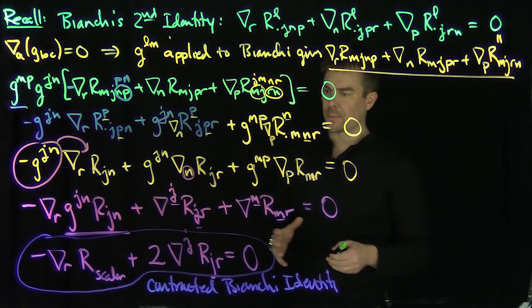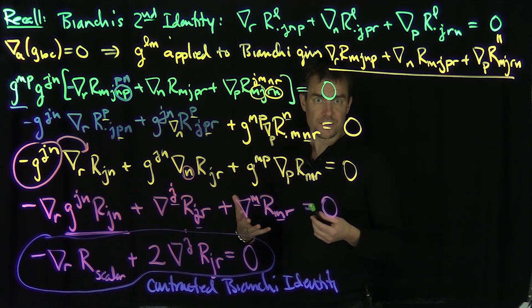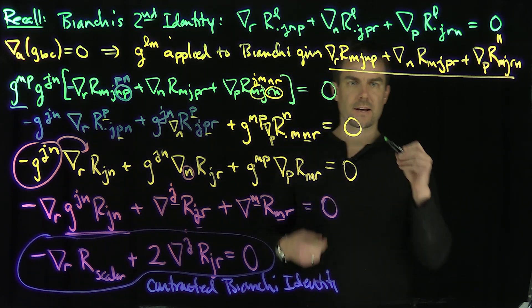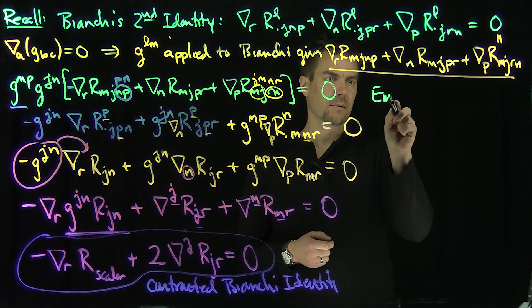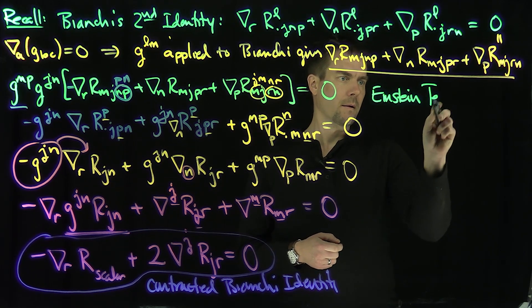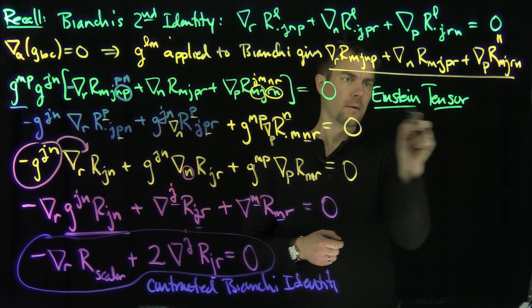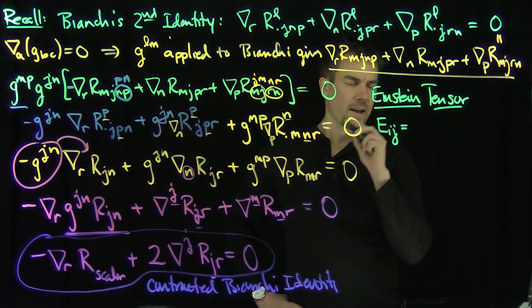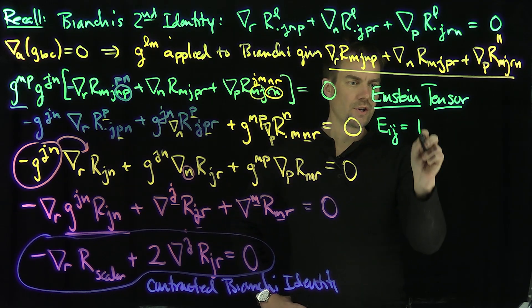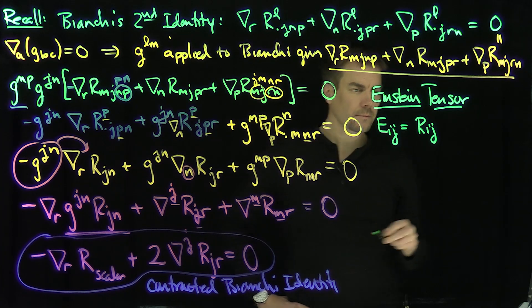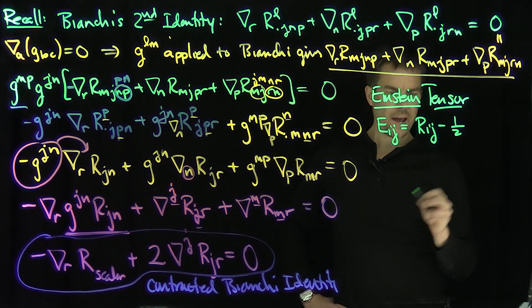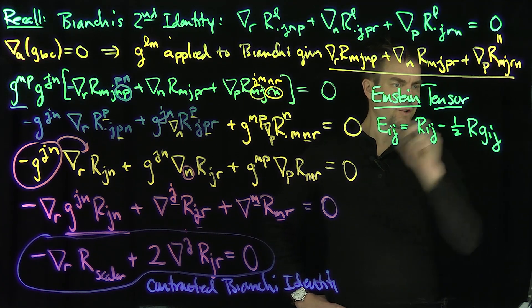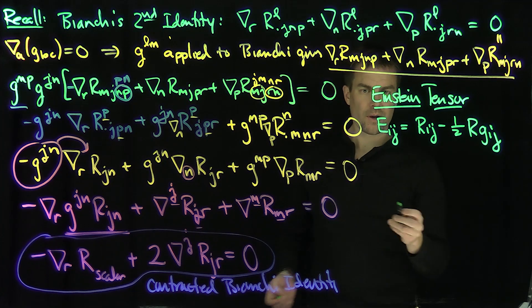So what use is this? Let me remind you that we have the Einstein tensor E_IJ, which is defined as the Ricci tensor R_IJ minus one-half of the scalar curvature R times the metric G_IJ.